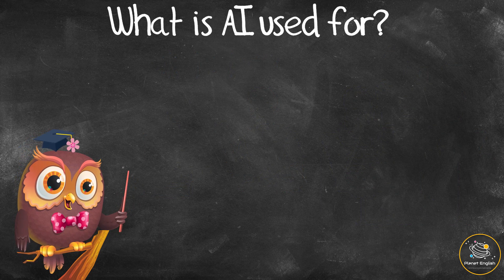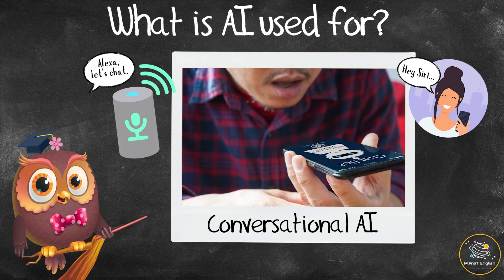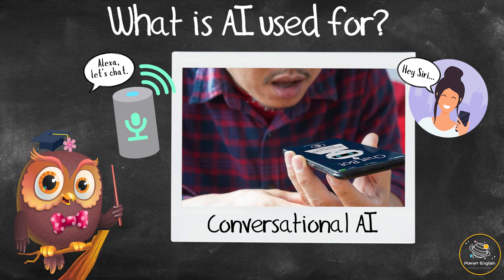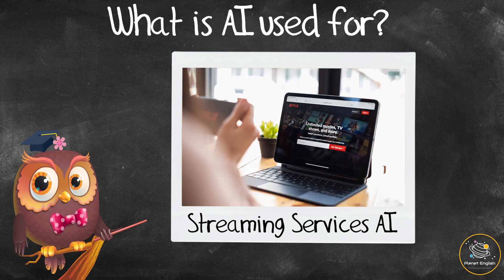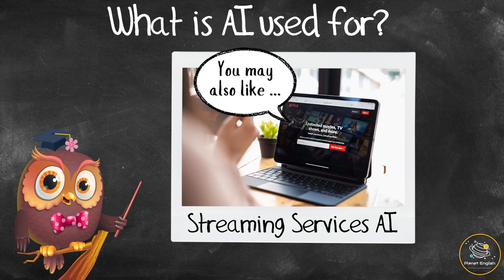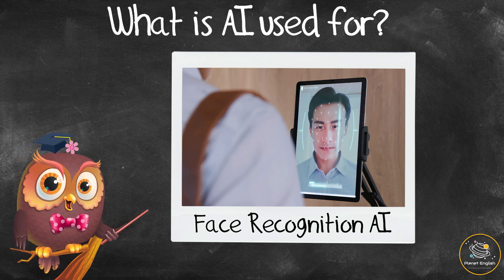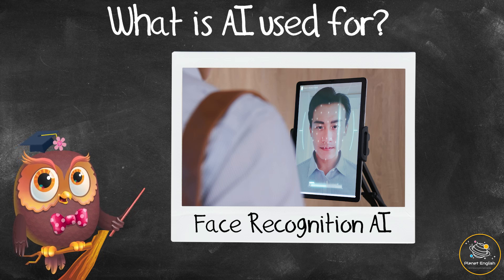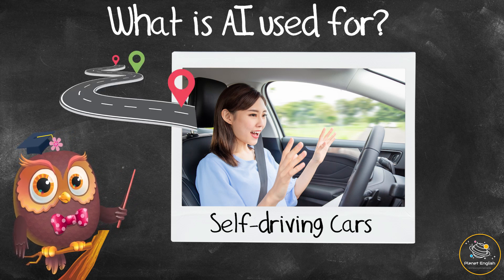What is AI used for? Although you may not realize it, artificial intelligence is all around us and people use it every single day. Alexa and Siri are examples of conversational AI — software that can interpret and understand human speech and respond with solutions in human-like voices. Streaming services like Netflix use AI to track what users watch in order to make customized suggestions. Face recognition on mobile phones is AI technology that can find and identify human faces in digital images and video.